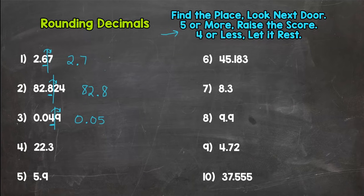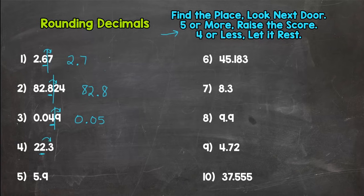For number four, let's round to the nearest whole number. If you ever hear 'round to the nearest whole number,' that means the ones place. We're going to see if this number is closer to twenty-two or twenty-three. Looking next door, that three says stay the same, so twenty-two and three tenths rounds to twenty-two.